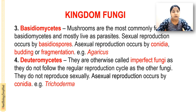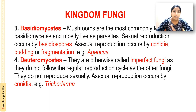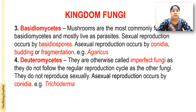Next is Basidiomycetes. Mushrooms are commonly found in Basidiomycetes, and they mostly live as parasites. Sexual reproduction occurs by basidiospores, and asexual reproduction occurs by conidia, fragmentation, or budding. Example is Agaricus.